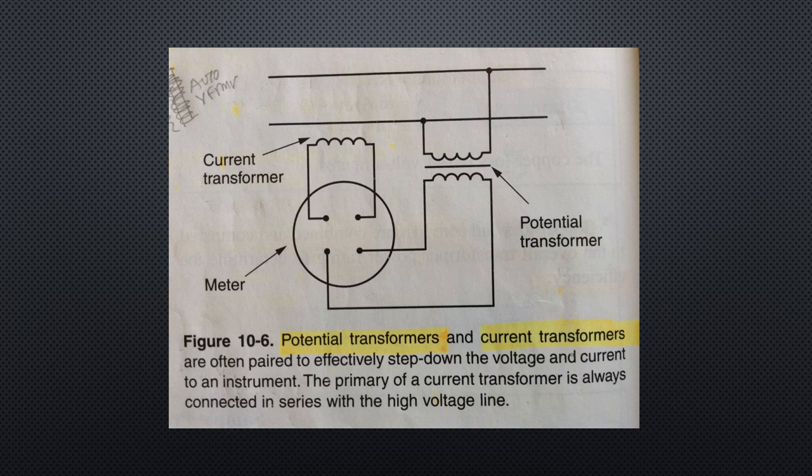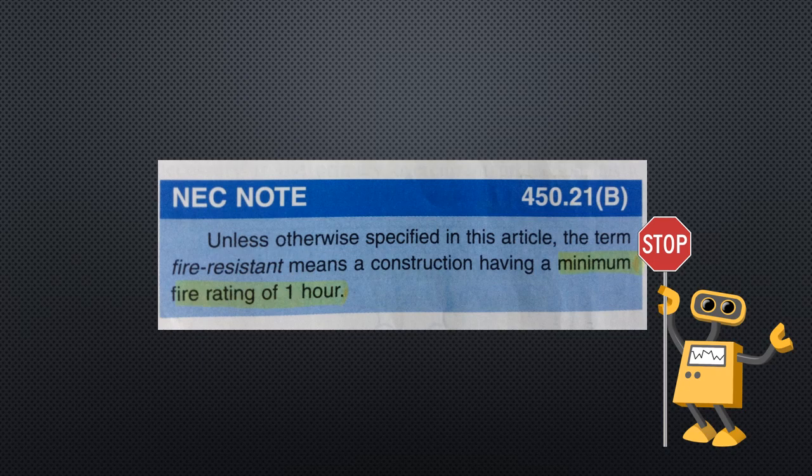Constant current transformers maintain an unchanging secondary current even if load demand varies, keeping delivered current within a 1% tolerance at all times. Control transformers reduce the primary voltage to 120 volts or less on the secondary, which is used to operate solenoids, relays, and contactors. NEC Note 450.21B: Unless otherwise specified, the term fire-resistant means construction having a minimum fire rating of 1 hour.